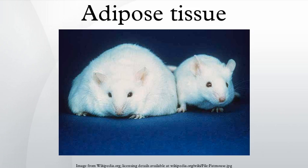Most of the remaining non-visceral fat is found just below the skin in a region called the hypodermis. This subcutaneous fat is not related to many of the classic obesity-related pathologies such as heart disease, cancer, and stroke, and some evidence even suggests it might be protective. The typically female pattern of body fat distribution around the hips, thighs, and buttocks is subcutaneous fat, and therefore poses less of a health risk compared to visceral fat. Like all other fat organs, subcutaneous fat is an active part of the endocrine system, secreting the hormones leptin and resistin.